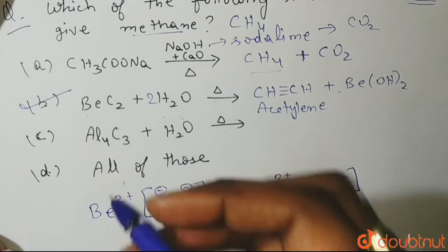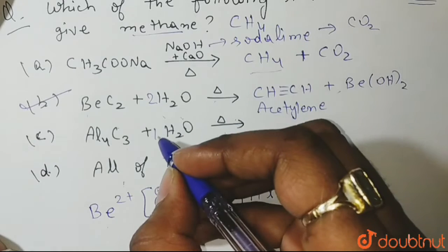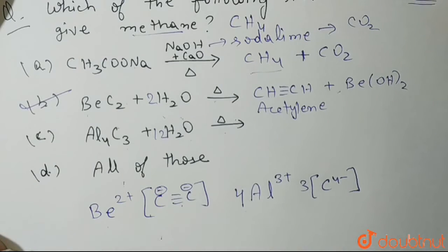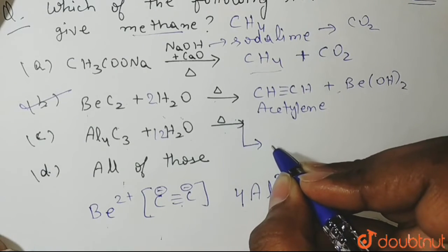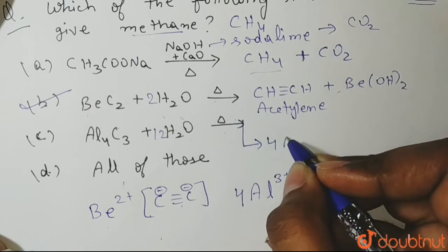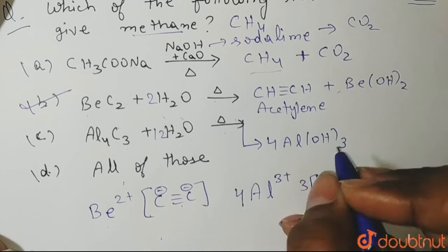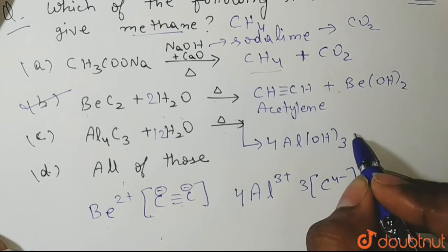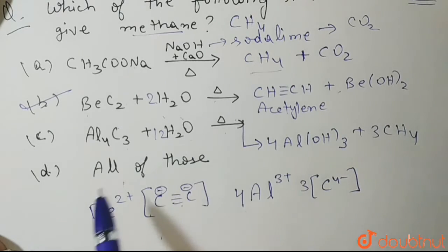Whenever we treat this with water, we take 12 molecules of water and heat it. What do we get? We get 4 molecules of aluminum hydroxide ALOH whole thrice and 3 molecules of methane will also be formed. Thus here methane is also forming, so this is also an incorrect answer.